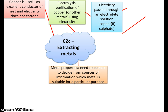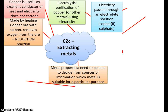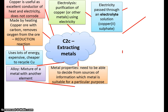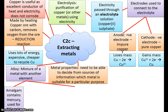In electrolysis you have electrodes which you place into the solution, and the solution is called an electrolyte because it can conduct electricity. One of the electrodes is called the anode because it is the positive electrode, and this is where the impure copper will lose mass as electrons are removed.